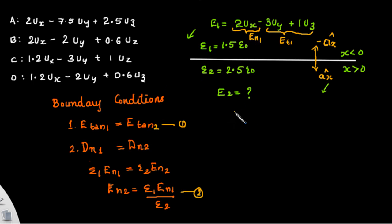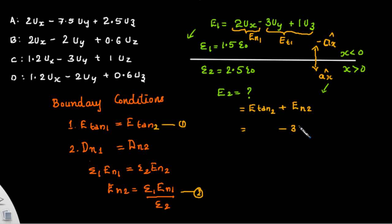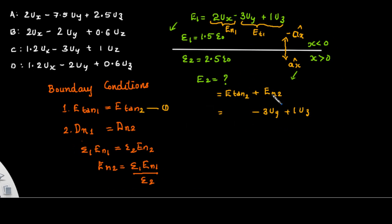E2 can be written as the tangential component in medium 2 plus the normal component of medium 2. Since the tangential field in medium 1 and medium 2 are equal, we can write the tangential part as minus 3 a_y plus 1 a_z. Now we need to find out the normal component.